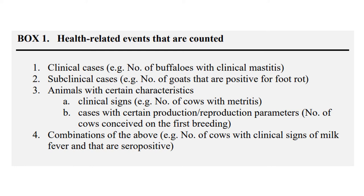So what are we actually counting — what are these measures of health actually measuring? We count clinical cases, for example the number of buffaloes with clinical signs; subclinical cases, such as the number of goats positive for foot rot but not showing clinical signs; animals with certain characteristics; and cases of certain production parameters, like the number of cows conceived in first breeding — or a combination of the three.